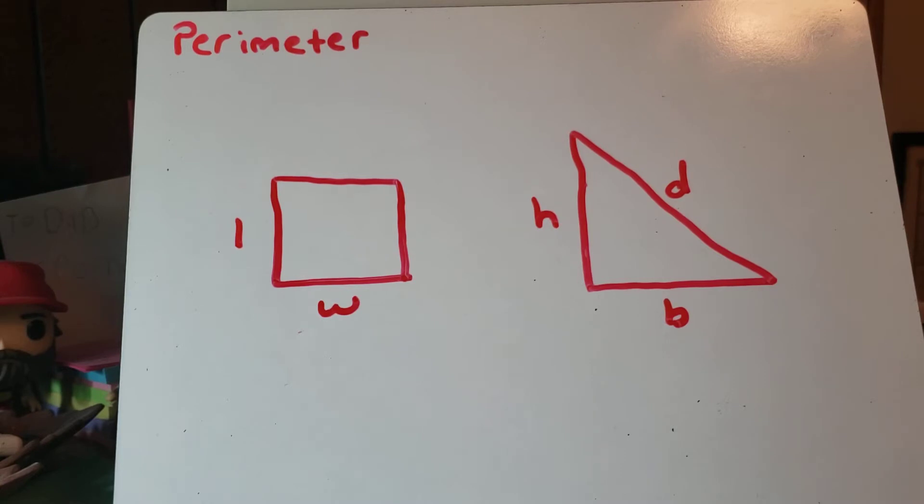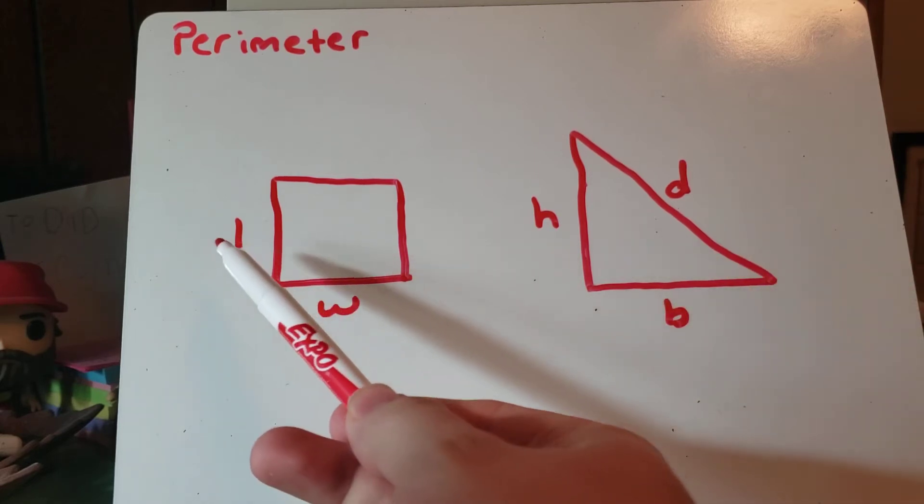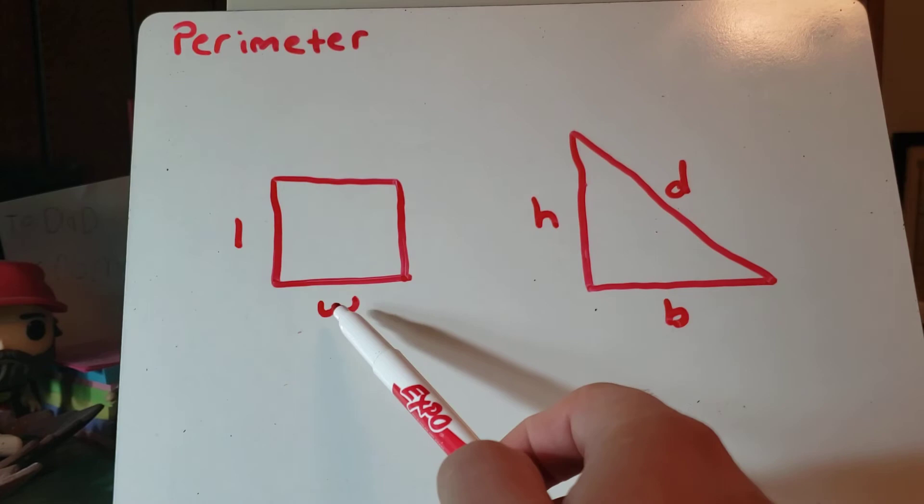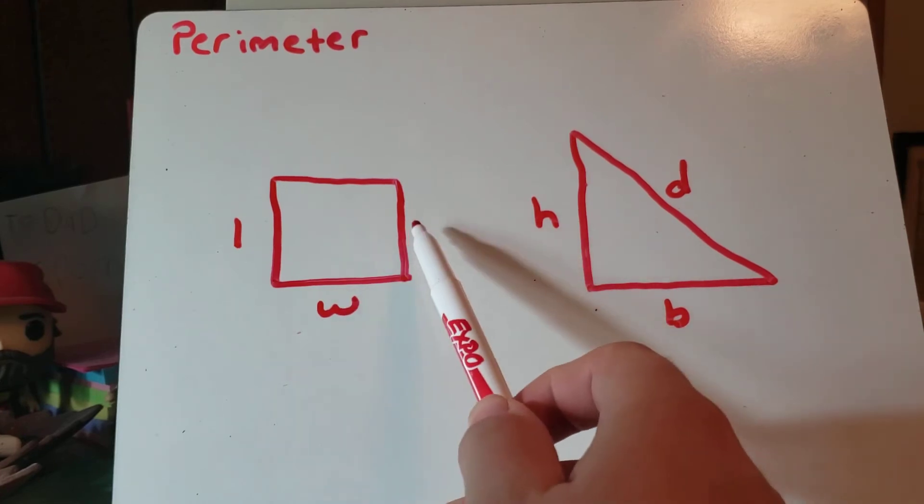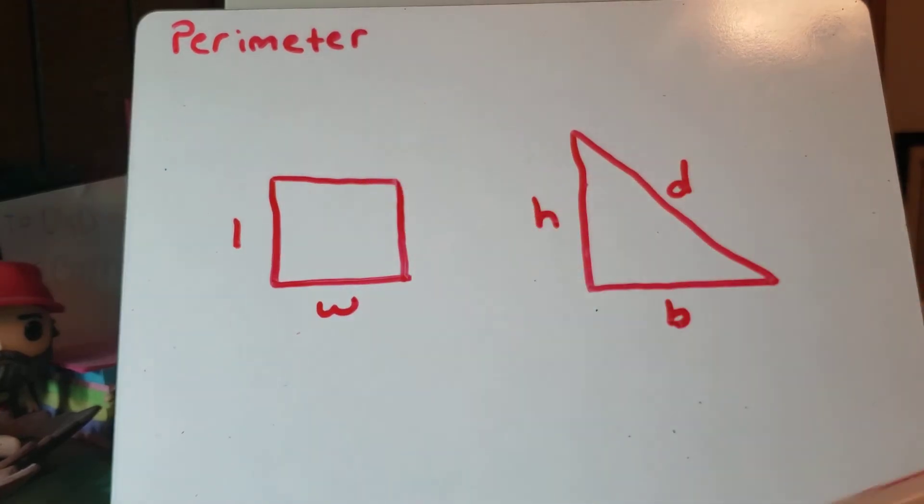So for instance, I've got a square here and a triangle, and to find the perimeter, we just have to add up all the different lengths of the sides. So for the square here, we would just have to add the length and the width, and the length, and the width, and we would get the perimeter.